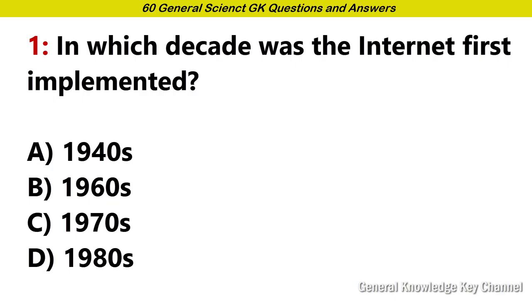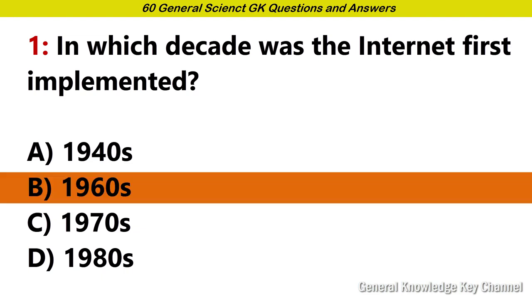In which decade was the internet first implemented? Answer B. 1960s.